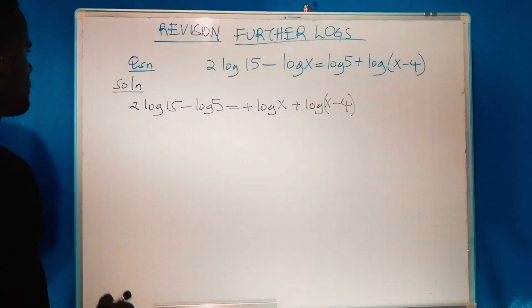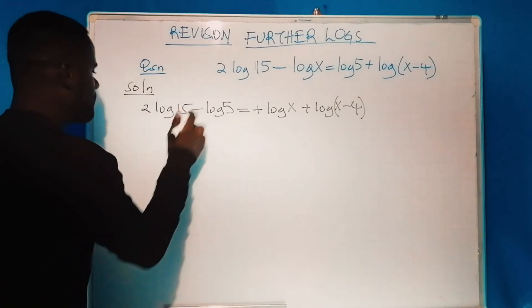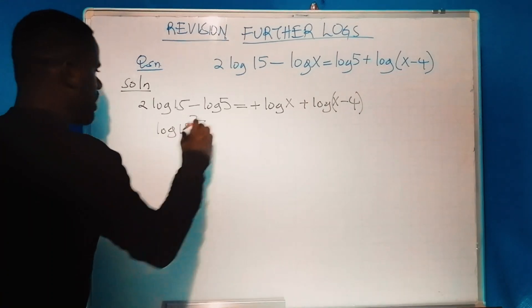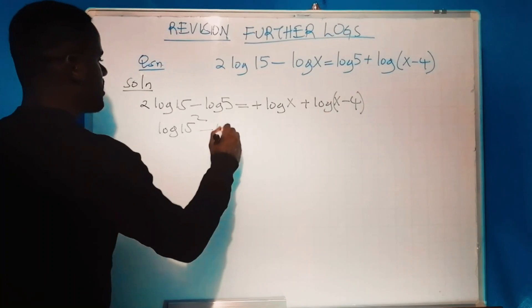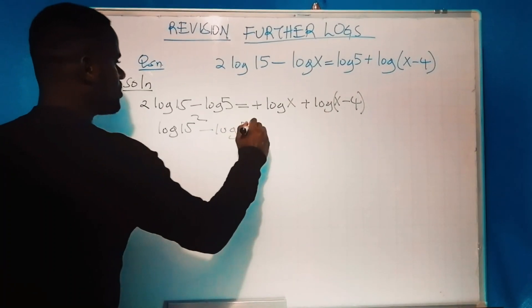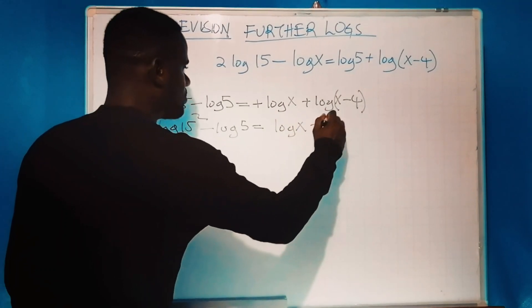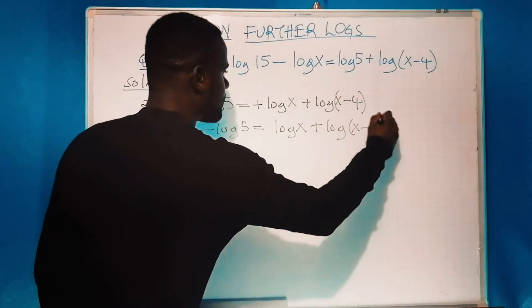From here, there is a law that allows me to write 2 log 15 as log of 15 squared. Therefore, I'll have log(15²) minus log 5 equivalent to log x plus log(x - 4).